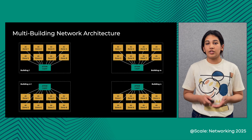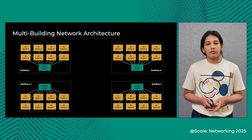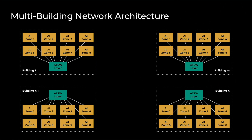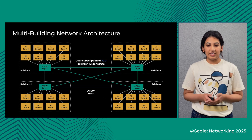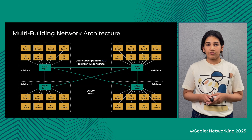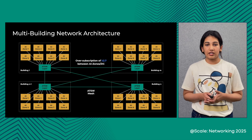Since the job size increased beyond 24K GPUs for LAMA 4, we had to do two things. One, we had to build a network spanning multiple buildings to support a cluster with over hundreds of thousands of GPUs. The network within the DC is still a three-layer claw architecture. Each DC has eight AI zones. To interconnect the buildings, we use a fully connected mesh between the ATXW layers of every building. Compared to a 24K cluster, we reduced our cross-zone oversubscription ratio from 1:7 to 1:2.7. The same oversub ratio is maintained beyond buildings as well, because LAMA 4 generates multiple parallel collectives, producing much higher outstanding traffic on our network. By reducing our oversub ratio, we ensure that our network is not a bottleneck for the next compute operation.